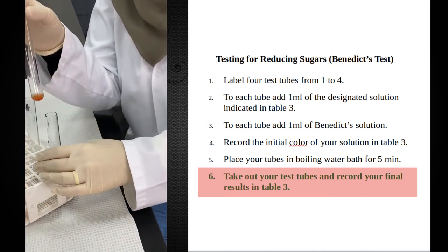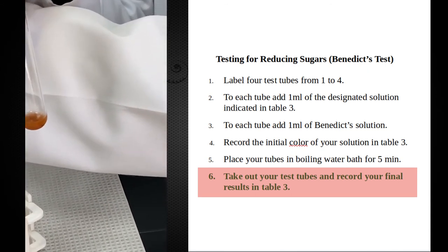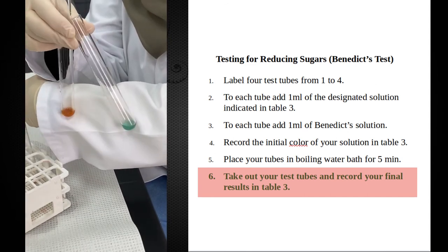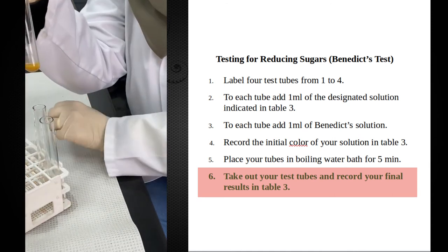The red precipitate can be seen in our positive control test tube. This is the glucose test tube, so it's very obvious the difference between a negative result and a positive result. We take a look at our milk results.